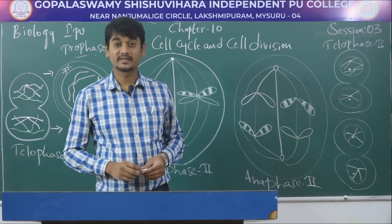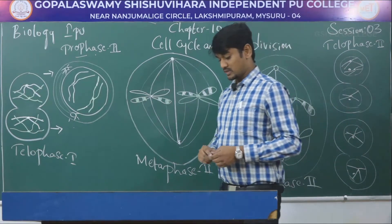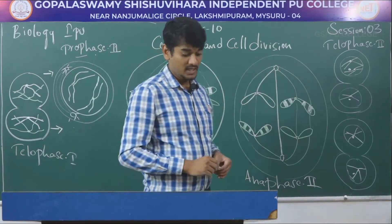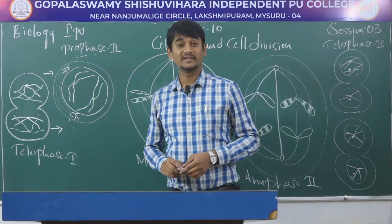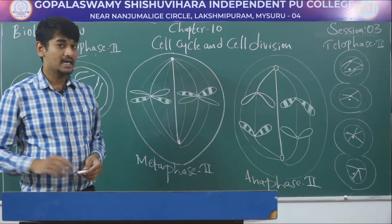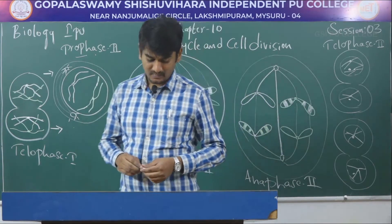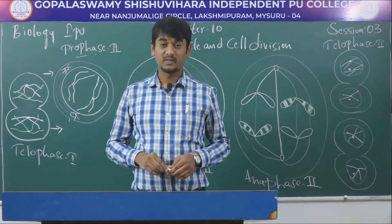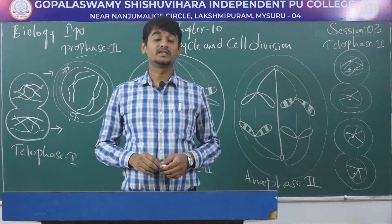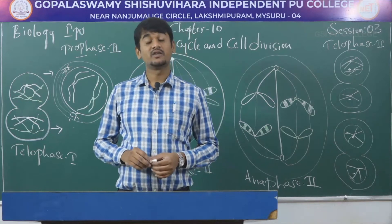Welcome to session 3. Dear students, in the last session we discussed about meiosis 1, which has 4 stages: prophase 1, metaphase 1, anaphase 1, and telophase 1 with cytokinesis, giving 2 daughter cells. In meiosis 2, each daughter cell undergoes division to give 4 haploid cells. The meiosis 2 stages include prophase 2, metaphase 2, anaphase 2, and telophase 2, followed by cytokinesis to give 4 haploid cells.